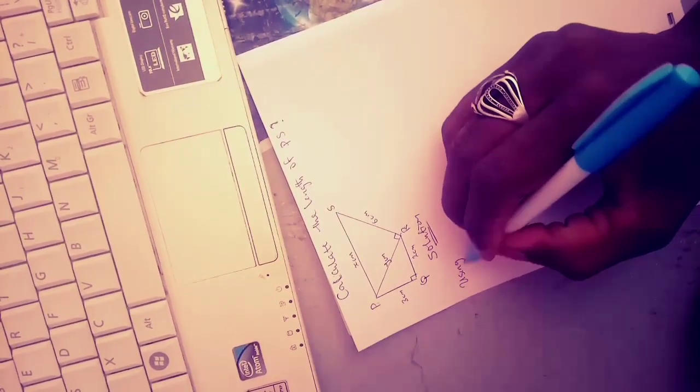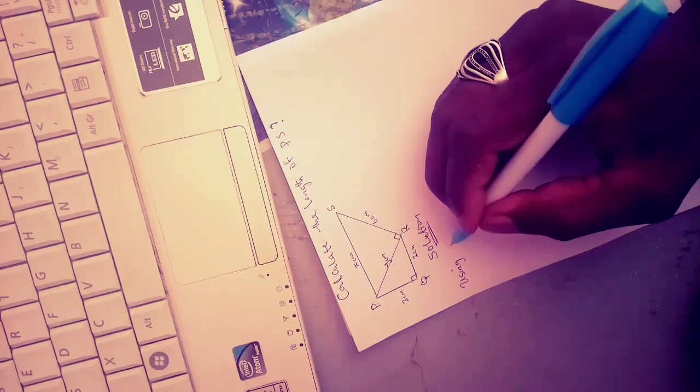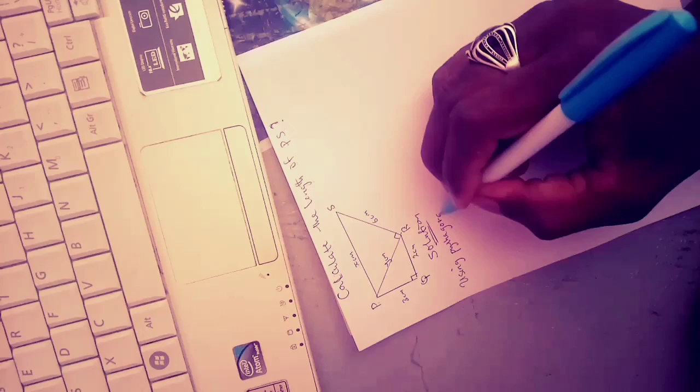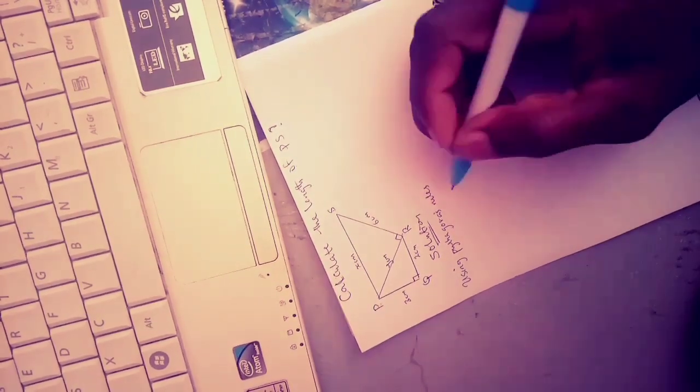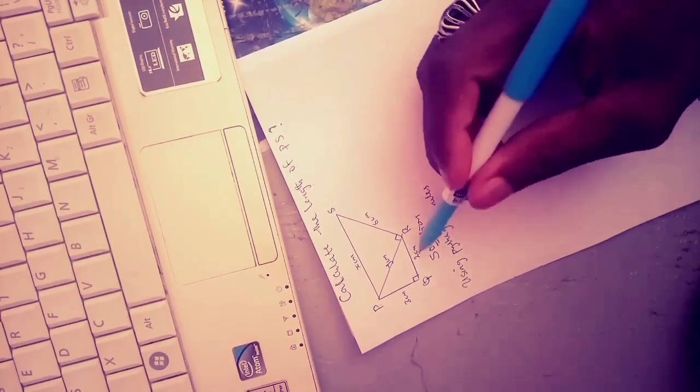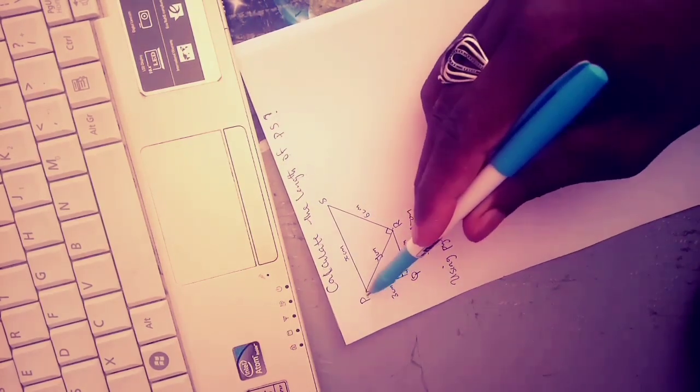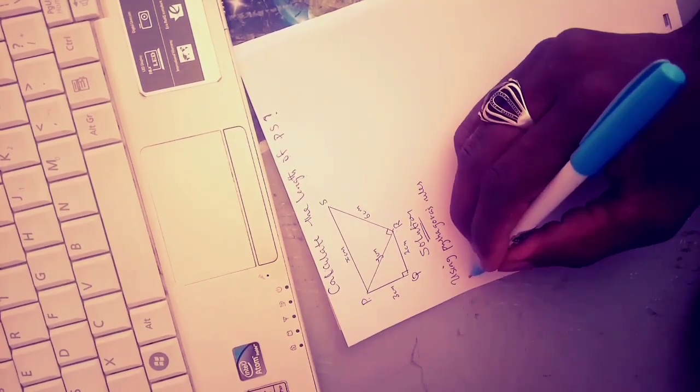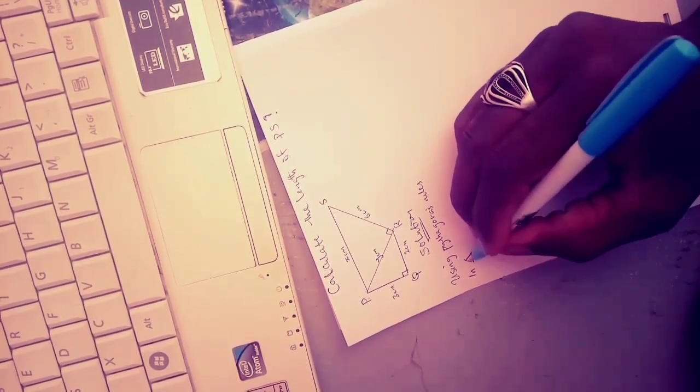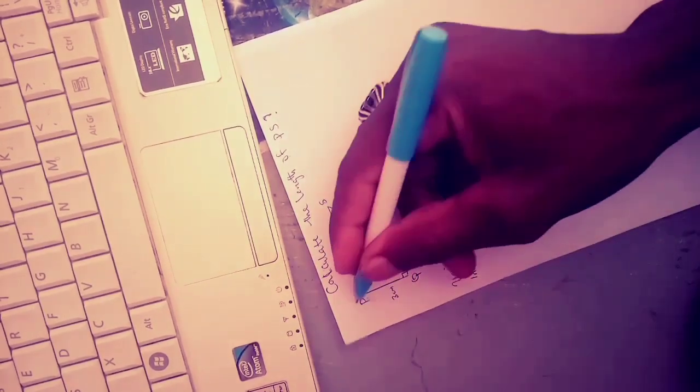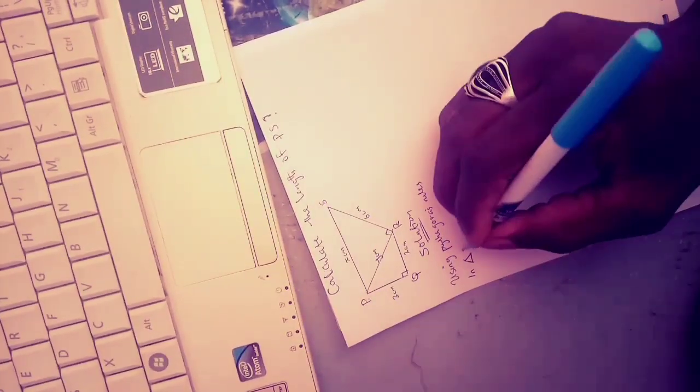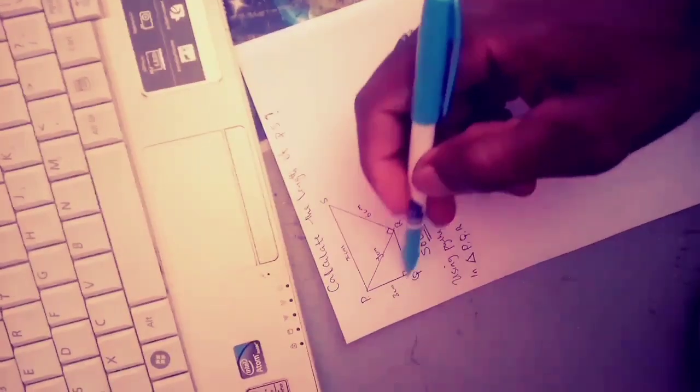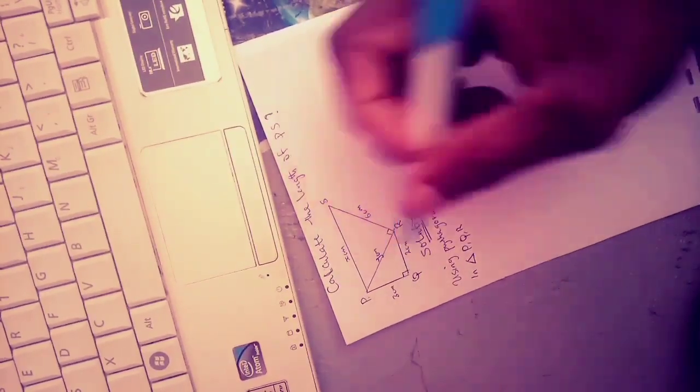Then write: using Pythagorean theorem. So here we go. Like I said, we are going to start with the first triangle, which is PQR. Therefore, in angle PQR, we are going to start with this triangle. As you can see...